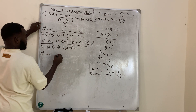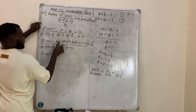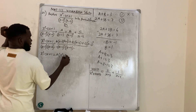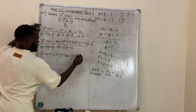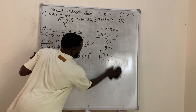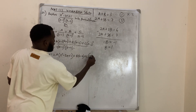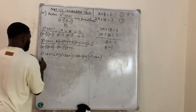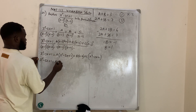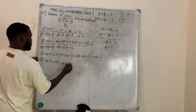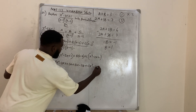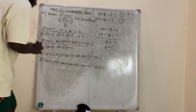Expanding: x² − 3x + 1 equals A(x² − 3x + 2) plus B(x − 2) plus C(x² − 2x + 1). Opening brackets: Ax² − 3Ax + 2A + Bx − 2B + Cx² − 2Cx + C. Now let us compare to get equations 1, 2, and 3.